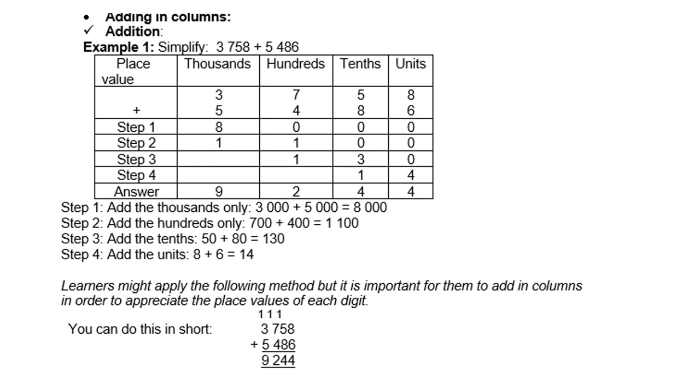When we add, we first add the units. You can first add the thousands if you want to. If you add the thousands, you get 8,000.